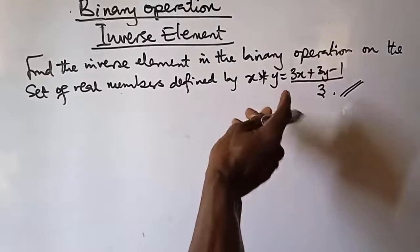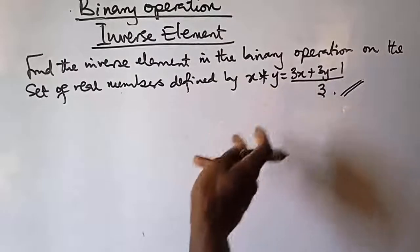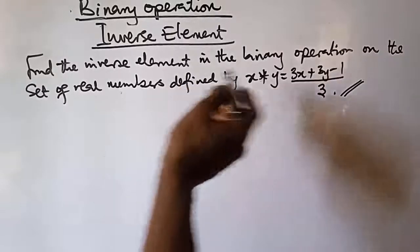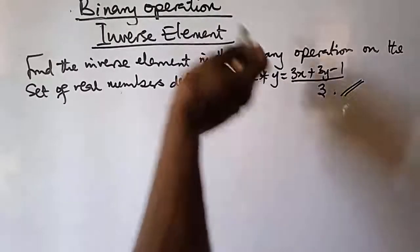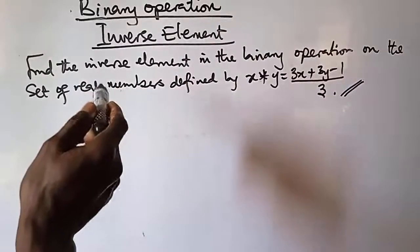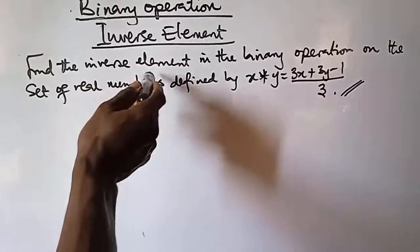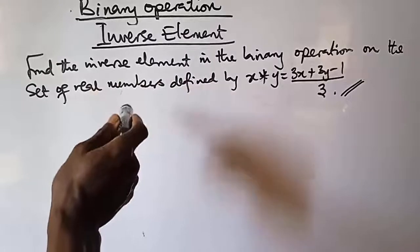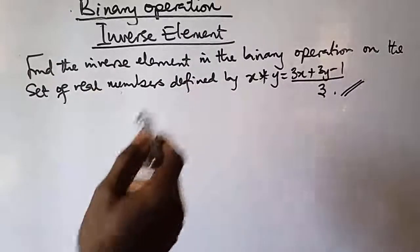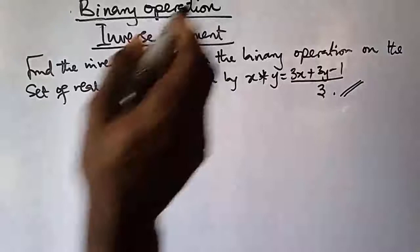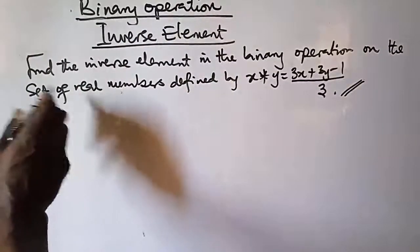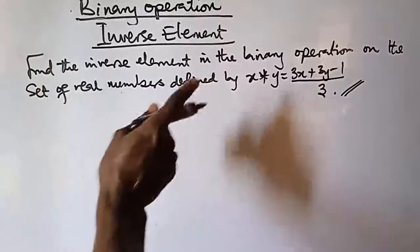The reason I want to use this is to better your understanding, because we've actually used this to solve the identity element previously. And as I said earlier, for us to get the inverse element we must first find the identity element. In the previous video we got one over three.